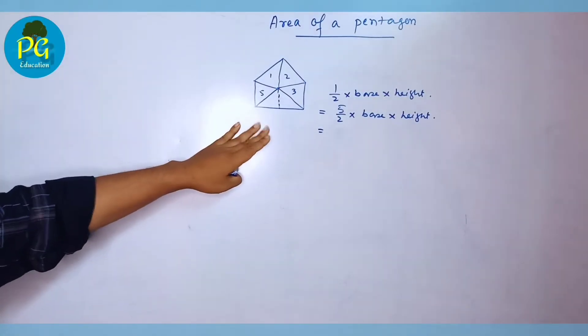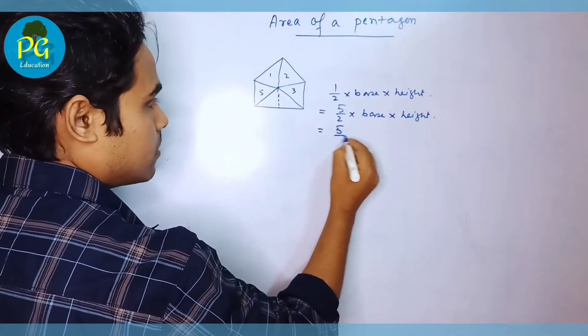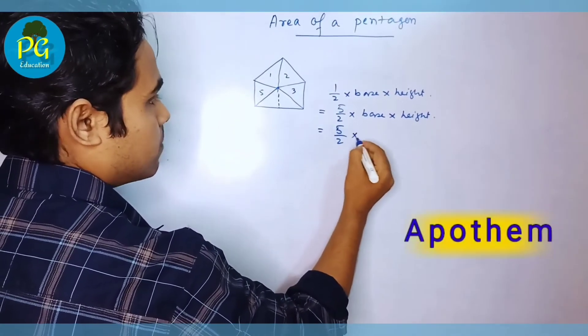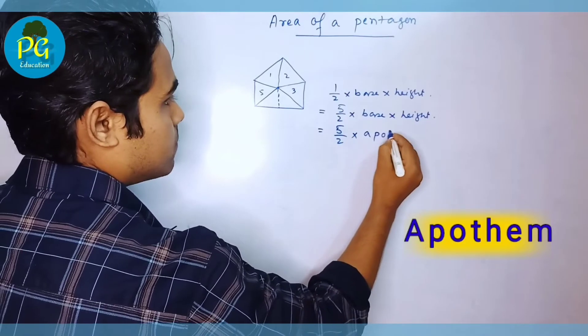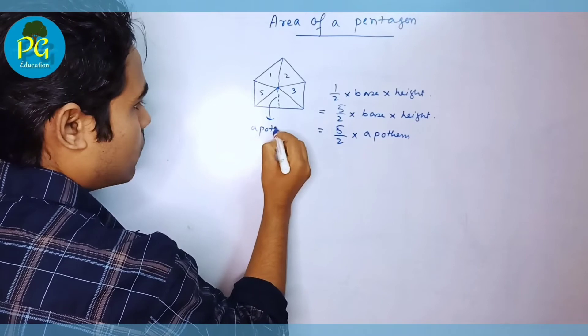Remember in case of a polygon, we do not use this term height rather we say apothem. So this is the apothem of pentagon.